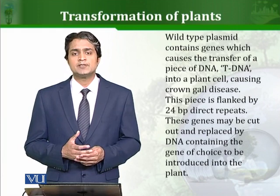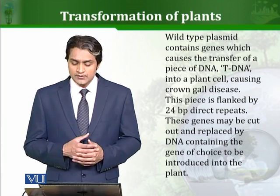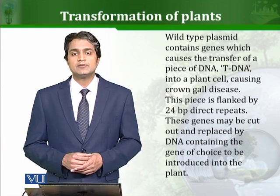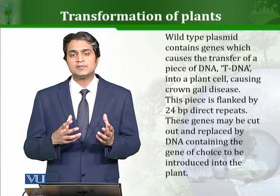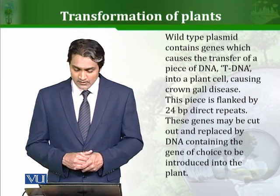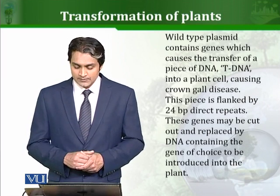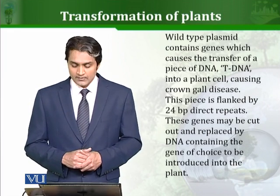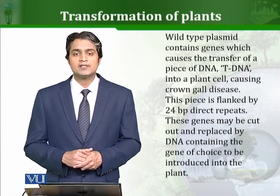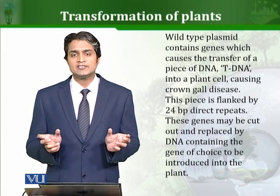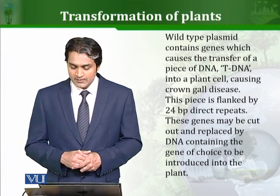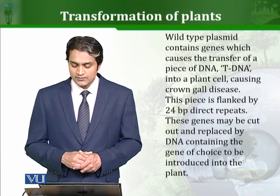Now, how does it operate? The wild-type Ti plasmid, which is without any mutations and is the natural form, contains genes which cause the transfer of a piece of DNA called T-DNA into the plant cell. When this T-DNA is transferred inside the plant cell, it causes crown gall disease, which is a kind of tumor. This T-DNA contains 24 base pair direct repeats on both its ends — not inverted repeats, but direct repeats. These genes may be cut out and replaced by the DNA containing the gene of choice to be introduced into the plant.